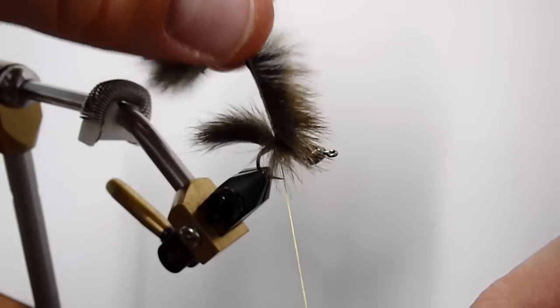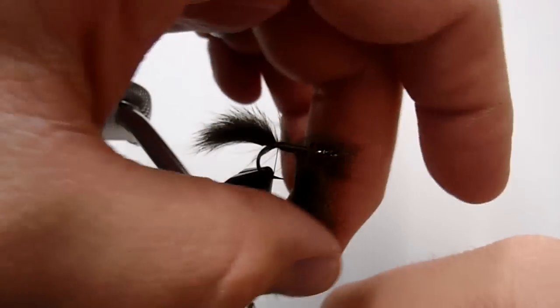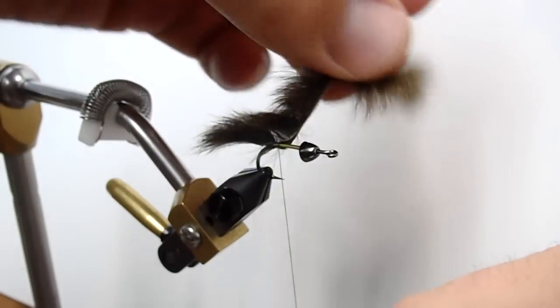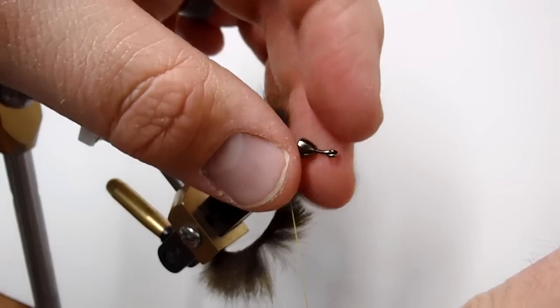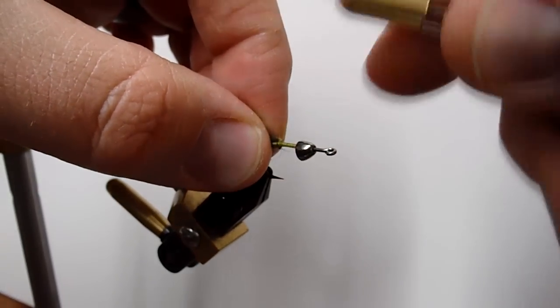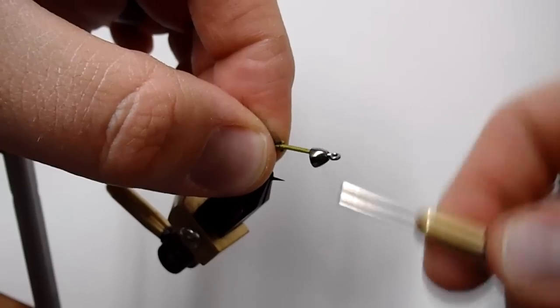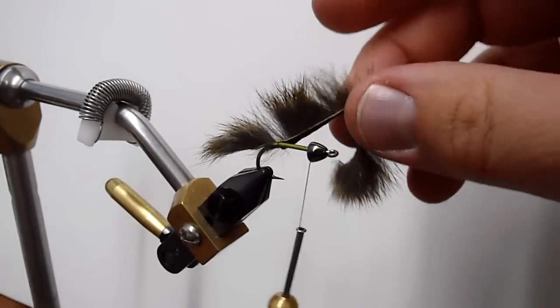You can see this stuff already wants to spin, which is good. That's one of the natural tendencies of this material here, to kind of spin around the hook, and we're going to use that to our advantage. So pull that material back, go ahead and wrap underneath it. You're going to take that thread forward, butt it right up against the back of the cone there.